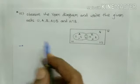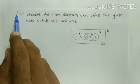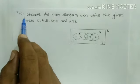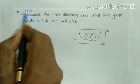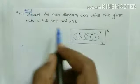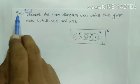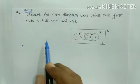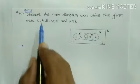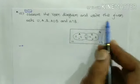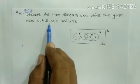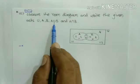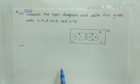Now the next question is question number 10. A star mark is given here, which indicates it is a higher order thinking skill question. Observe the Venn diagram and write the given sets: U, A, B, A union B, and A intersection B.